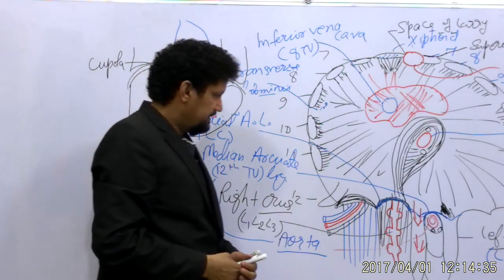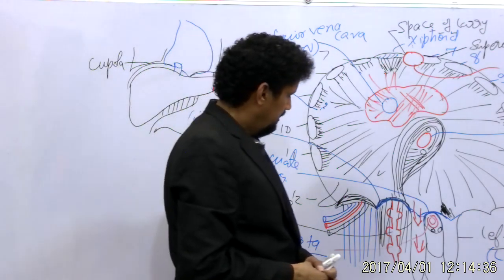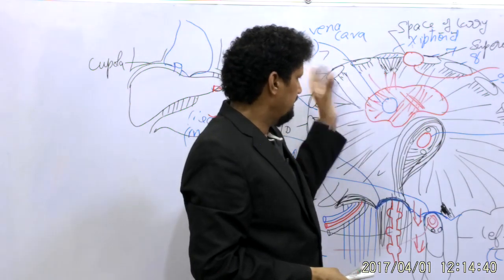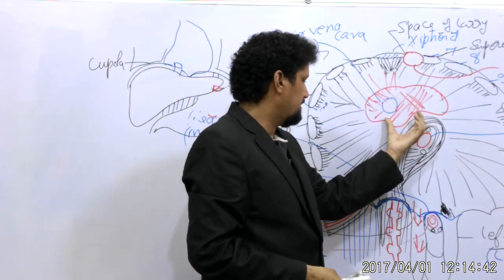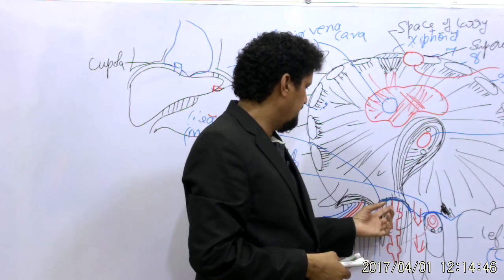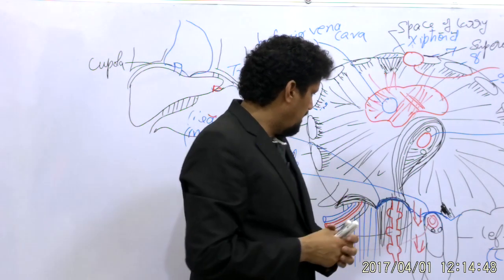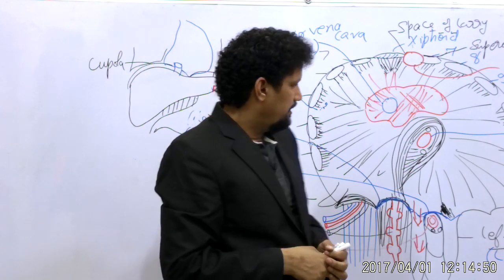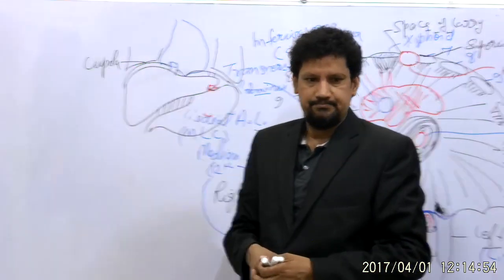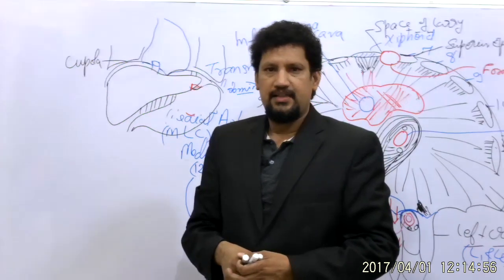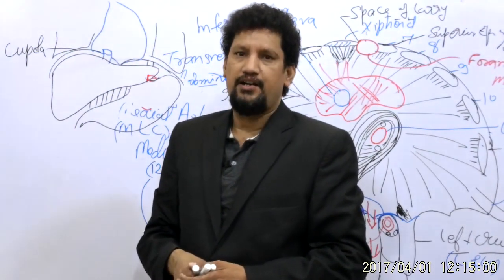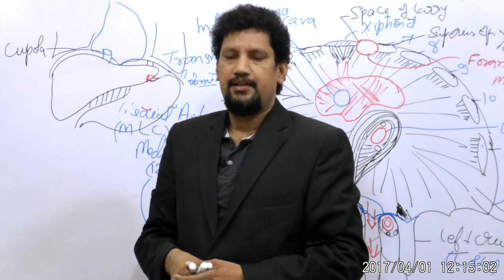In summary, we have covered the anatomy of the diaphragm including its origin, insertion into the central tendon, the two crura, the medial and lateral arcuate ligaments, and the openings in the diaphragm. The next lecture will cover the blood supply, nerve supply, and hernias of the diaphragm.